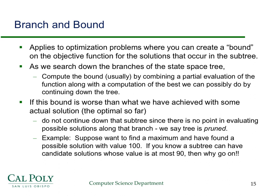At each step of the way, you compute a bound that usually combines a partial evaluation of the function you're trying to optimize along with some computation of the best you can do by continuing down the tree. If this bound is worse than what you've already achieved with some actual solution — some approximation to the optimal so far — then you don't continue down that subtree. There's no point in evaluating possible solutions along that branch. We say the tree is pruned.